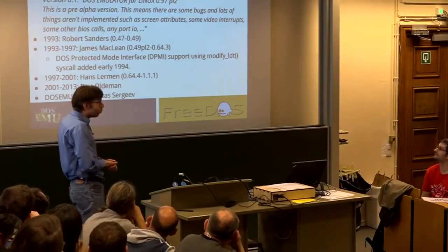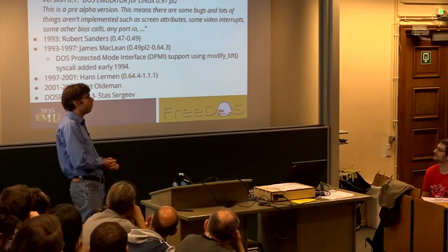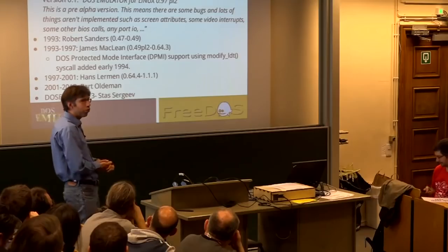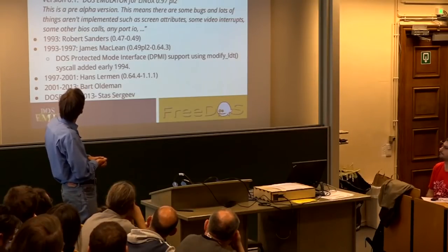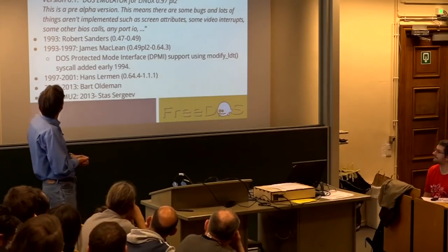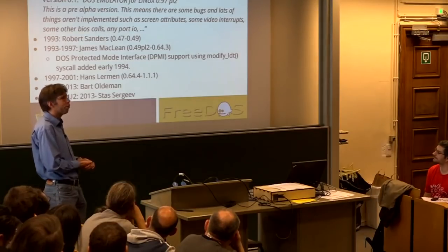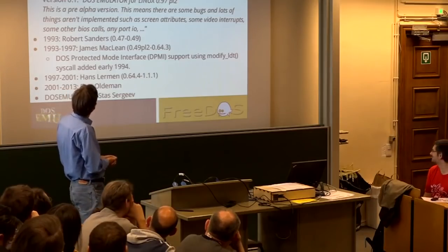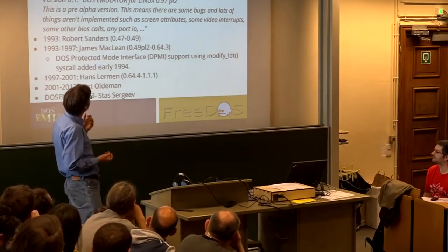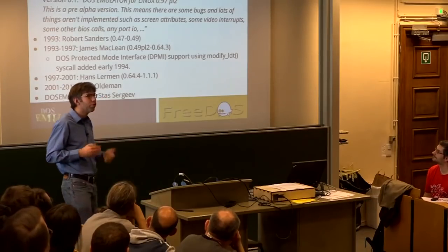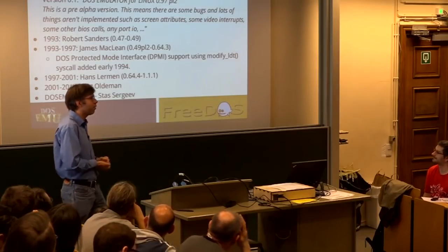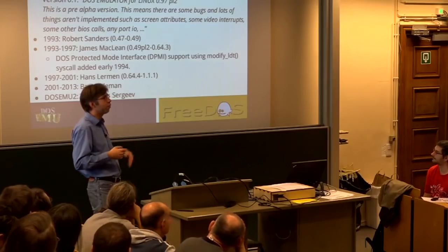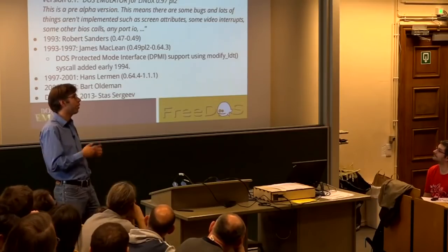DOSEMU is one of the oldest projects around that was purely aimed at Linux. Going back into history — at one point I downloaded all the old tarballs — the very first version was 0.1, released on September 3, 1992, which makes DOSEMU almost 26 years old, maybe older than some people in this room. It was released as "DOS emulator for Linux 0.97PL2," where 0.97PL2 was the version of the Linux kernel at that time. There was very fast-paced development, so things were tightly coupled — a feature would be added to the Linux kernel and they'd start using it straight away. It was a very hectic development period.